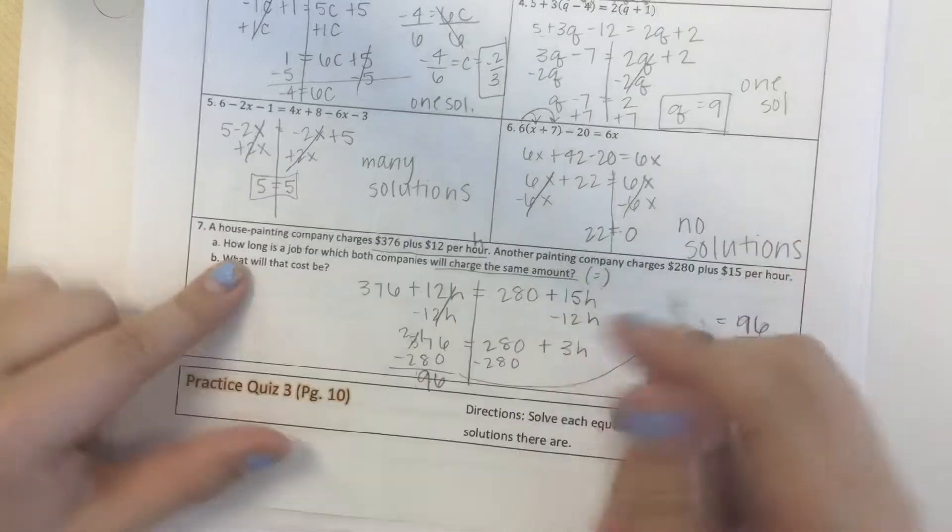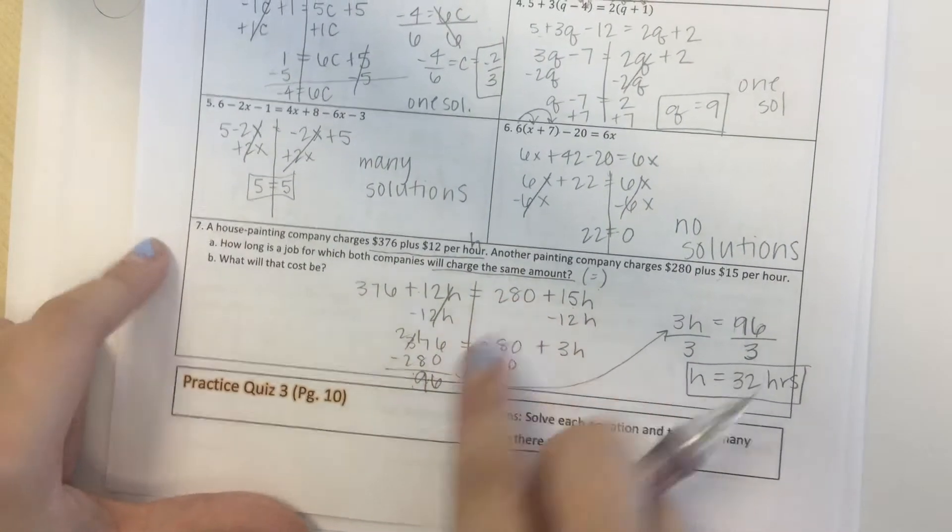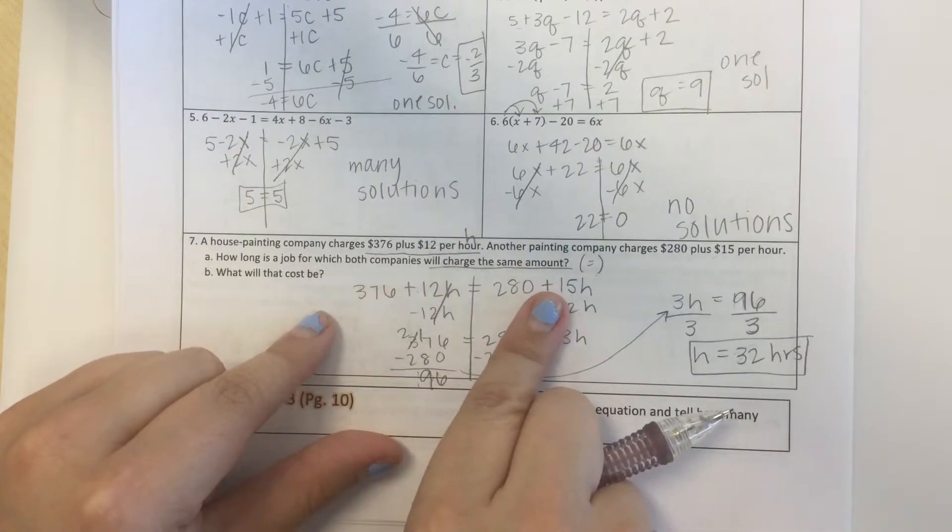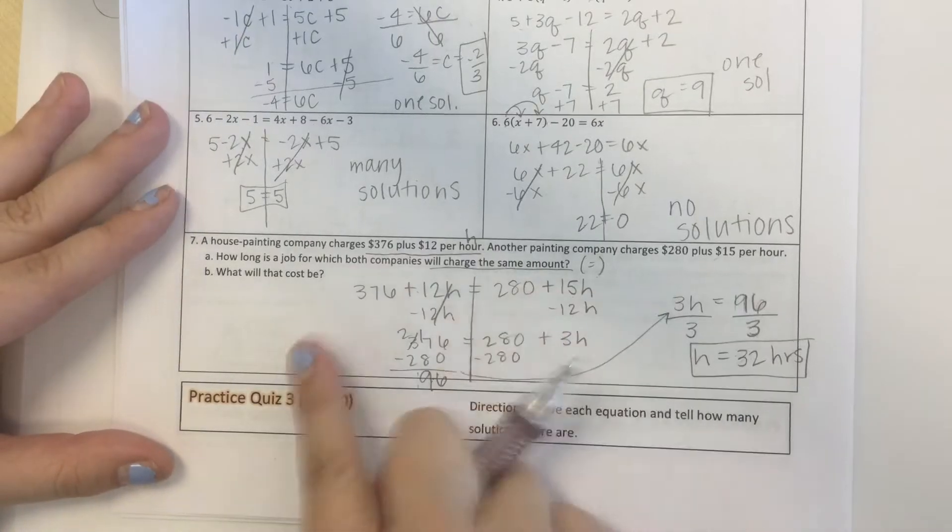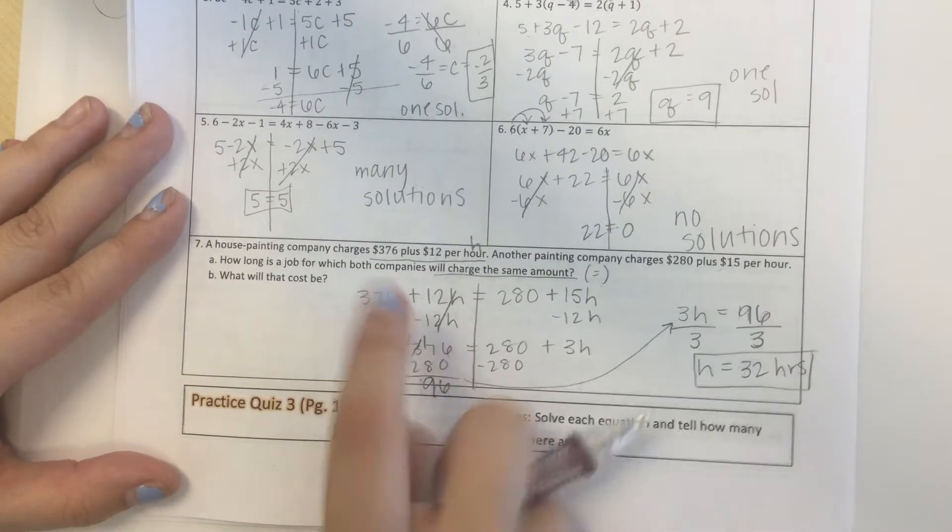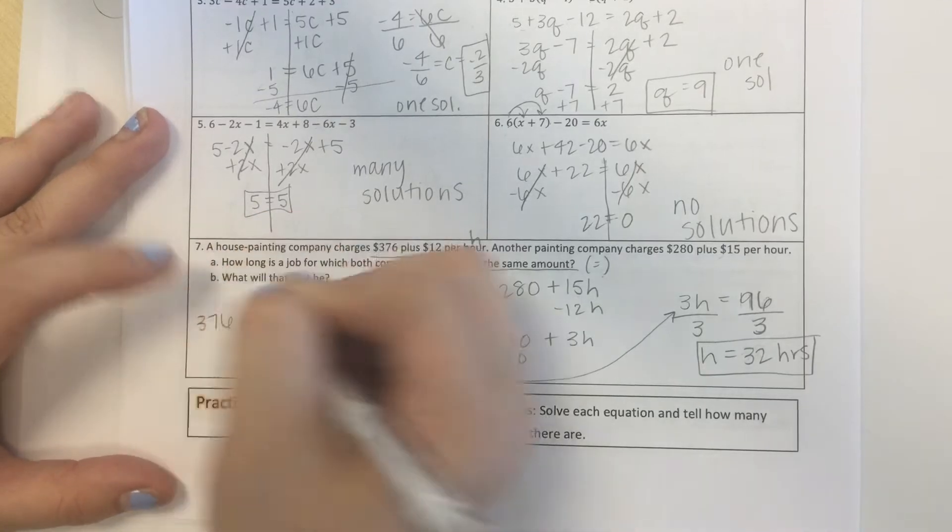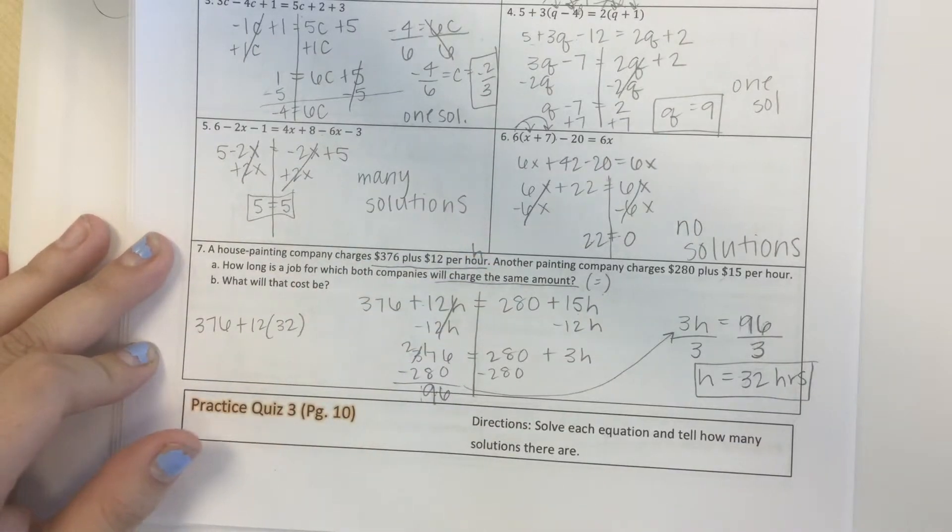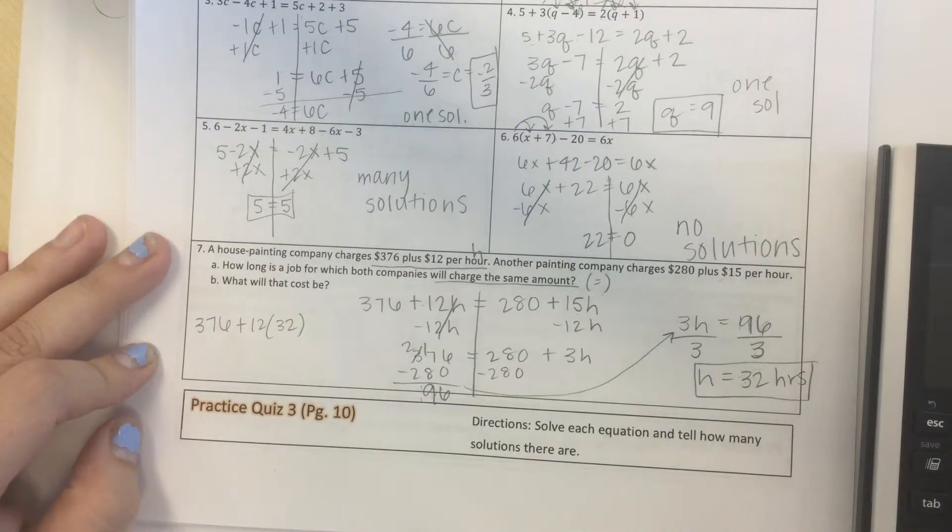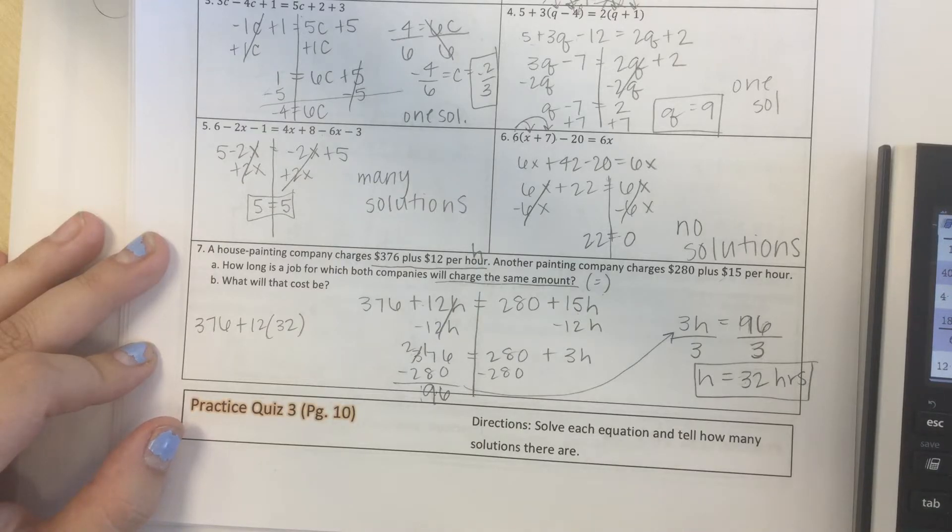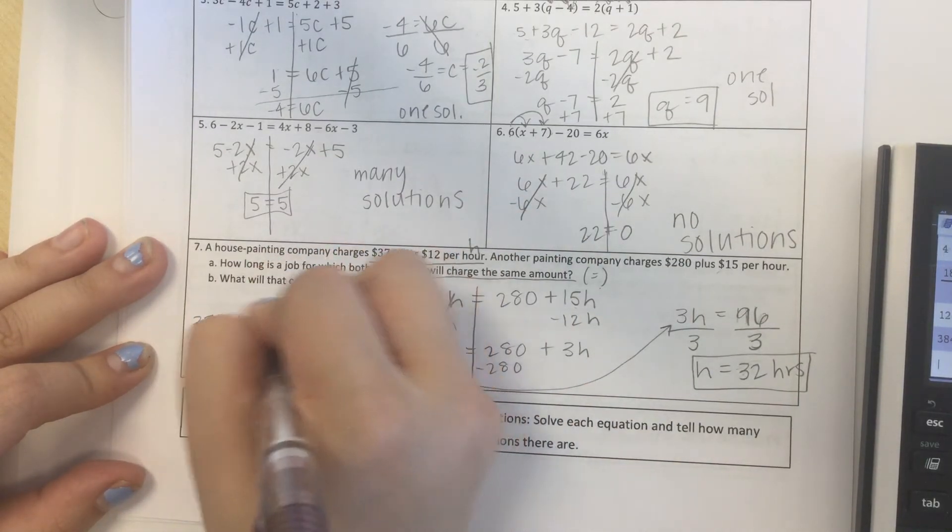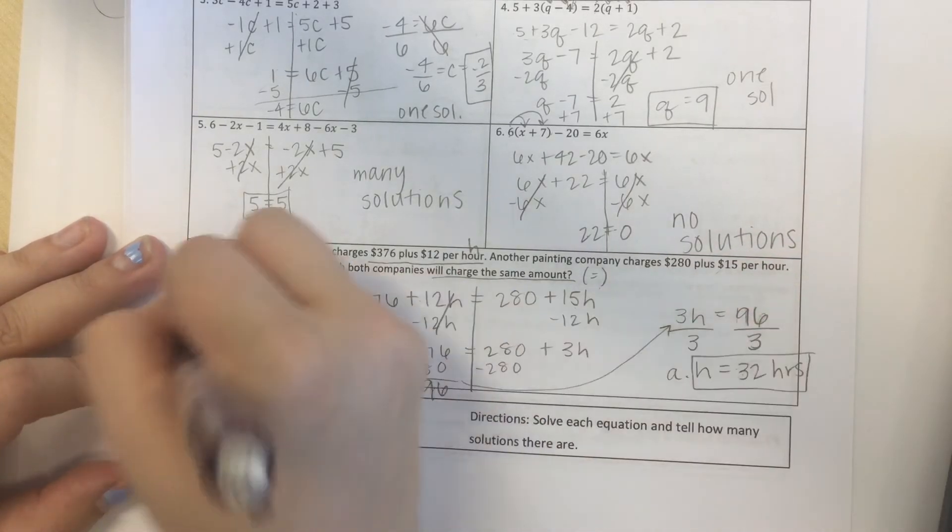What will that cost be? Well all we have to do is take this, plug it in for h to either of these equations since it's going to give us the same thing to figure out what the cost is. So let's do this one over here just arbitrarily. 376 plus 12 times 32. Grab my calculator, so 12 times 32 plus 376, I get $760. So this is part a and this is part b.